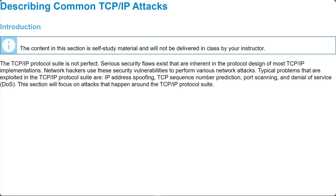Welcome back everybody. We're going to move into module number two, another self-study module describing common TCP/IP attacks. In this lesson, we'll talk about legacy TCP/IP vulnerabilities, IP vulnerabilities, ICMP vulnerabilities, TCP and UDP vulnerabilities, attack surface and attack vectors, reconnaissance attacks, access attacks, man-in-the-middle attacks, denial-of-service attacks, distributed denial-of-service attacks, reflection and amplification attacks, spoofing attacks, DHCP attacks, and then we'll conclude with our summary challenge.